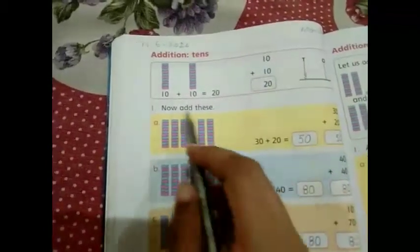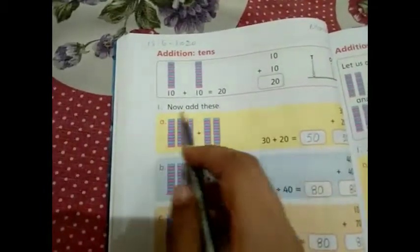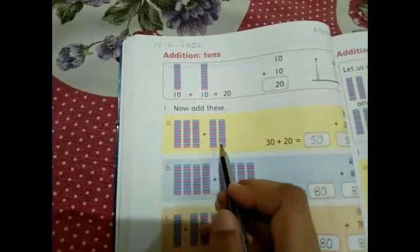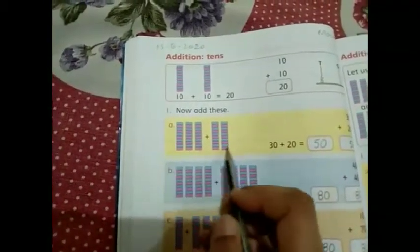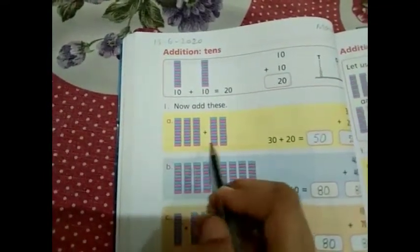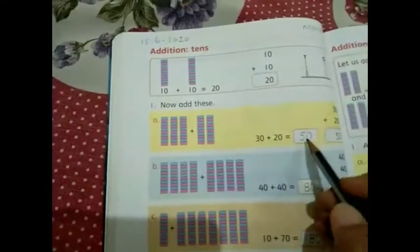Now when we add these numbers, we have to count it all together: 1, 2, 3, 4, 5. Total bars are 5. So 30 plus 20 is equal to 50.